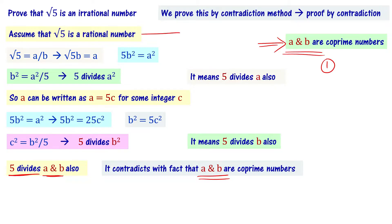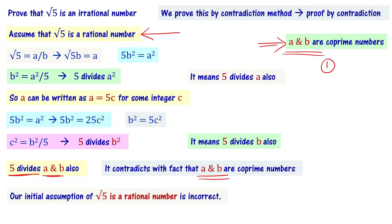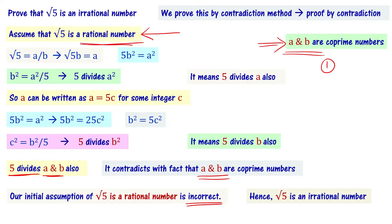It contradicts with the fact that a and b are co-prime numbers. Therefore, whatever assumption we made in the beginning — that root 5 is a rational number — that initial assumption is incorrect. So root 5 is not a rational number; it is an irrational number. So we can say that root 5 is an irrational number. This is what we were asked to prove, and we did that by proof by contradiction method.